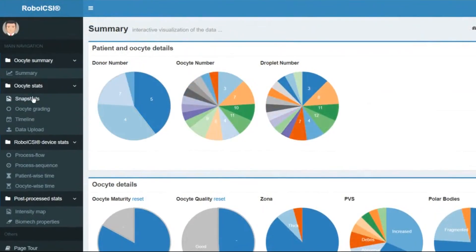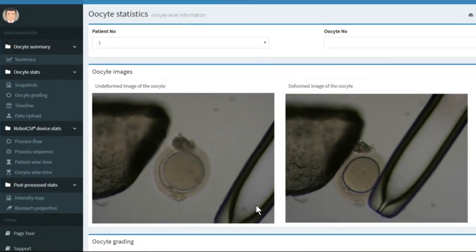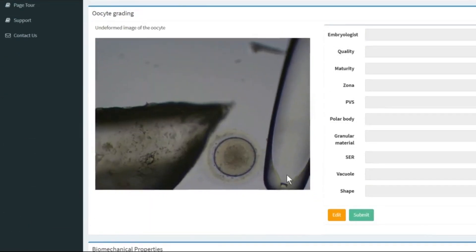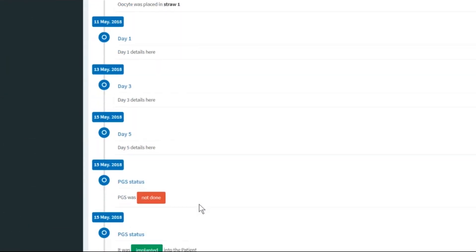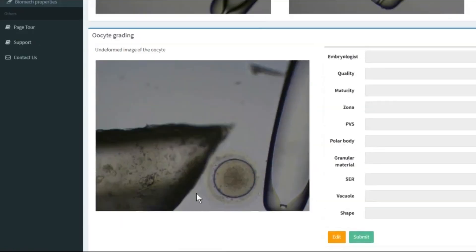Robo-ICSI seamlessly collects additional data like timestamps, user interactions, process steps, images and videos, and presents them coherently on a dashboard. Clinics can use this data to gather insights.